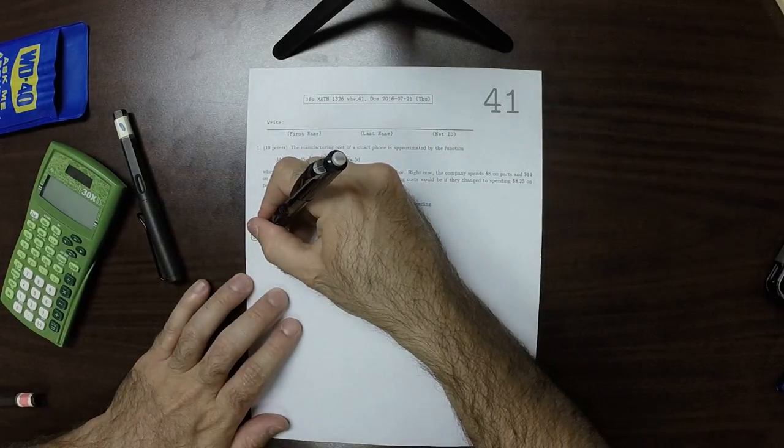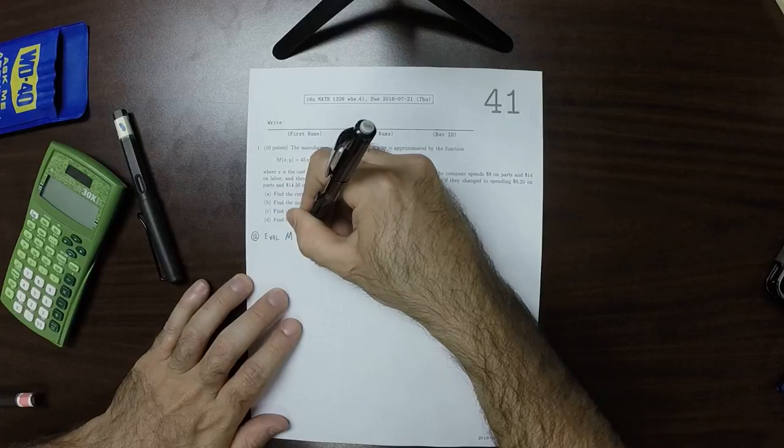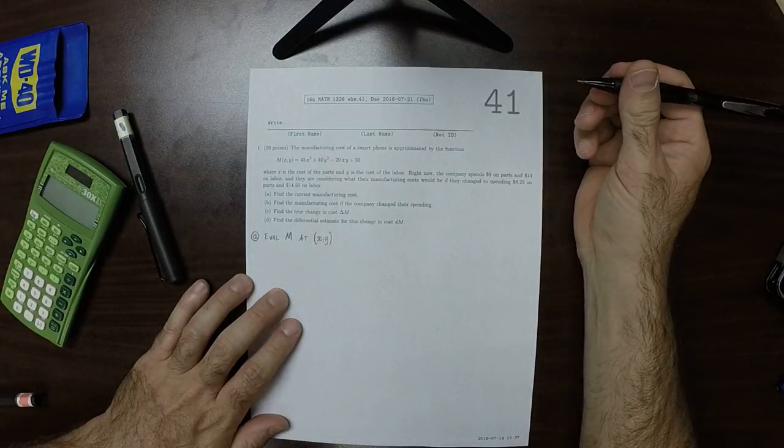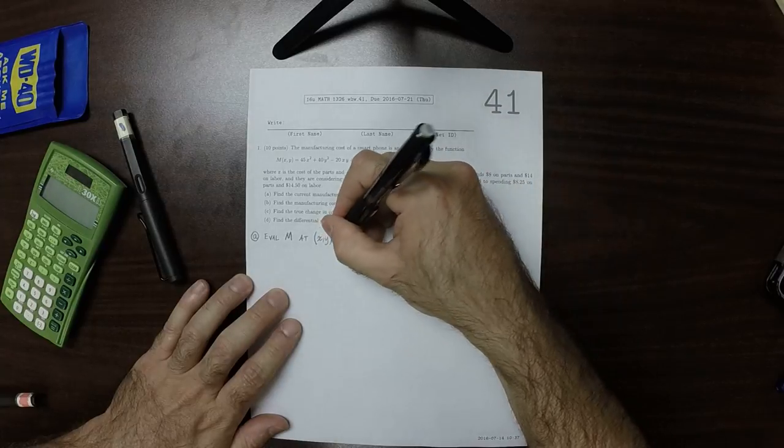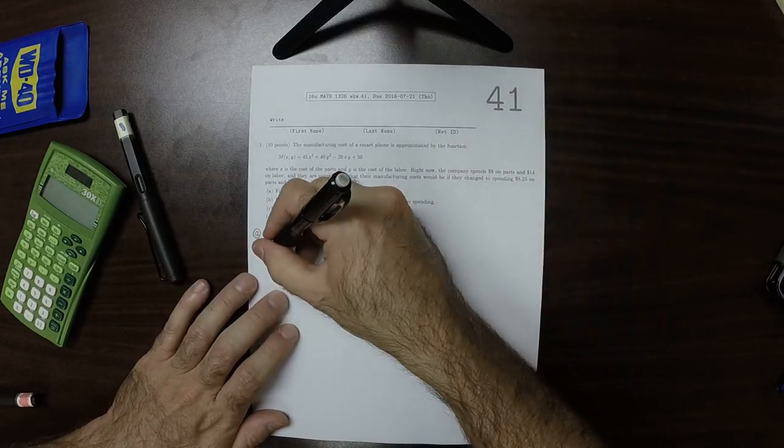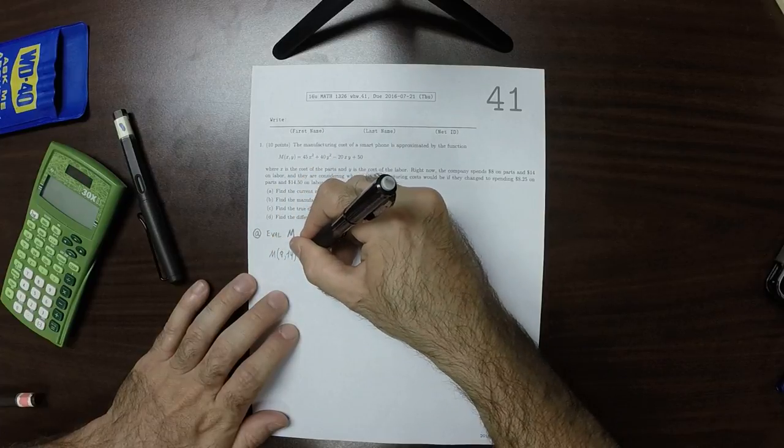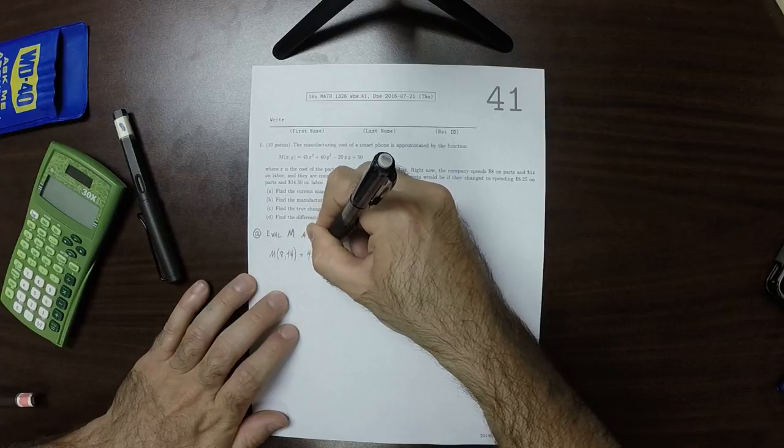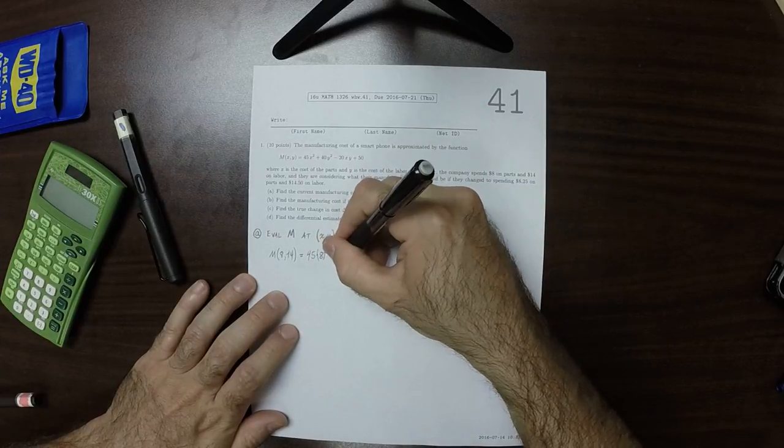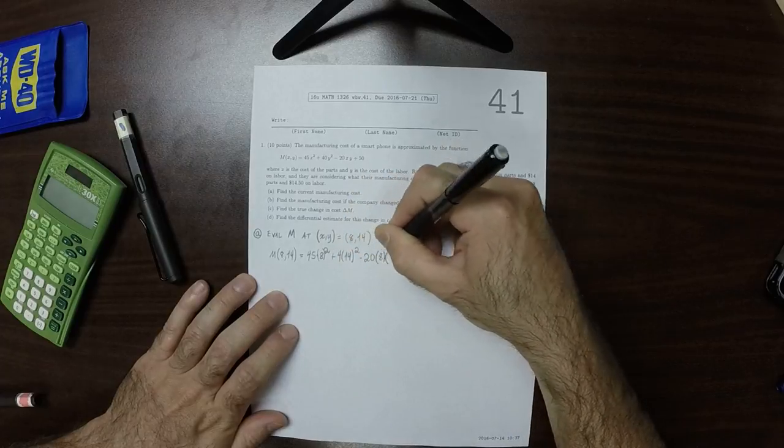In the end, what it's asking is evaluate M at XY equals 8, 14. Okay, so M evaluated at 8, 14. That's 45 multiplied by 8 squared plus 40 multiplied by 14 squared minus 20 multiplied by 8 multiplied by 14.